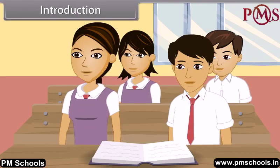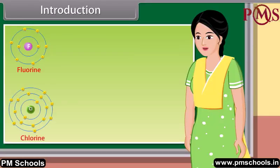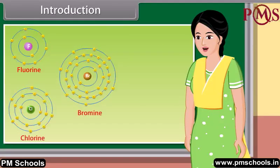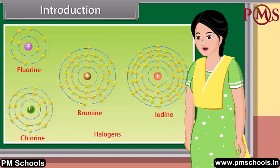And what are halogens, ma'am? Halogens are the reactive non-metals having seven valence electrons.